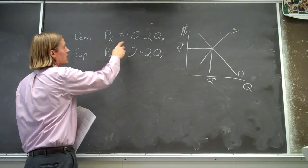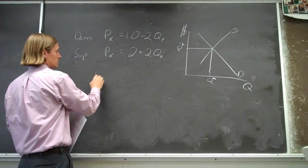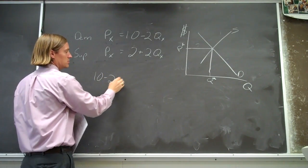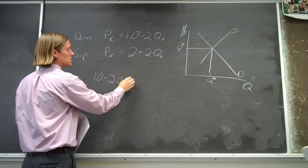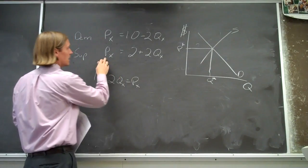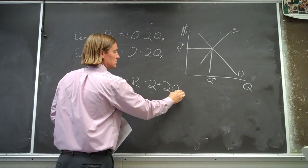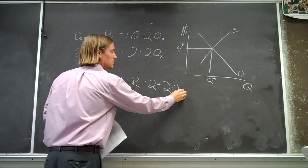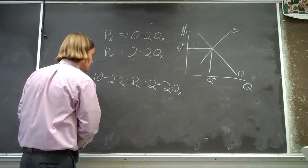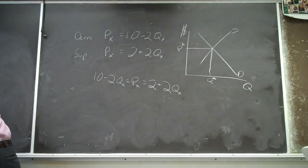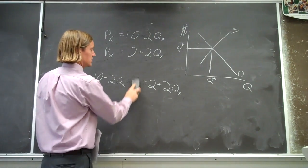And so, the demand function, we can set 10 minus 2q is equal to px, and then px is equal to 2 plus 2qx, right? Okay, and then we can, if we can find an eraser, just get rid of that.